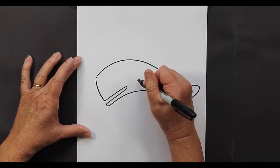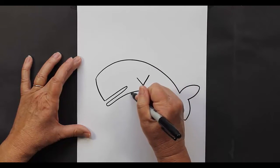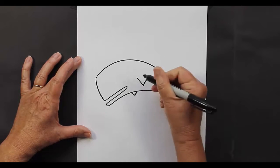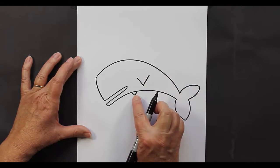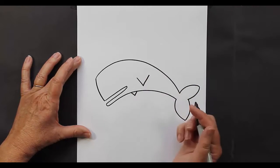We are going to make some side fins. Now this one is a V on his body and this little guy is just peeking out from the other side of his body so it's a very small V.